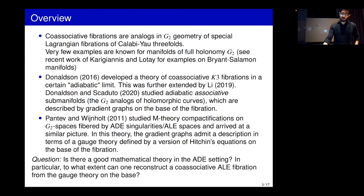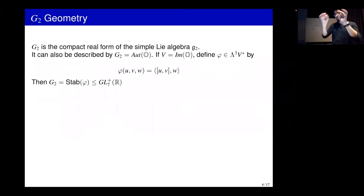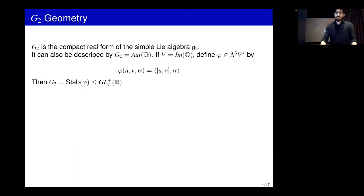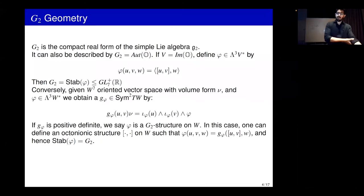Some basics of G2 geometry. G2 is the compact real form of the simple Lie algebra g2 — the one with a Dynkin diagram of two dots and three lines. A more geometric description: it's the automorphism group of the octonions. If you take the imaginary octonions, you can define a three-form using the inner product and the bracket defined by the octonionic structure, and G2 is exactly the stabilizer of this form inside GL(7).